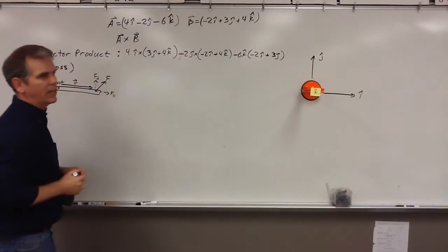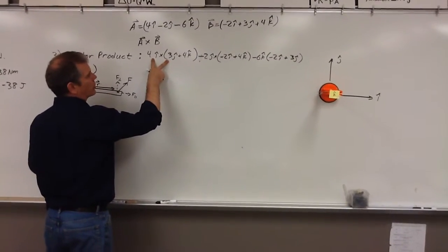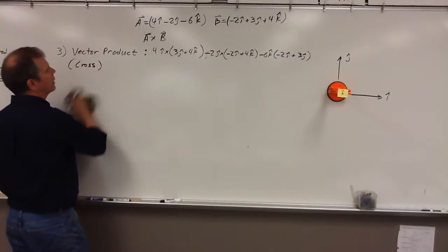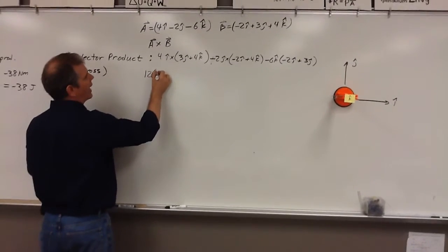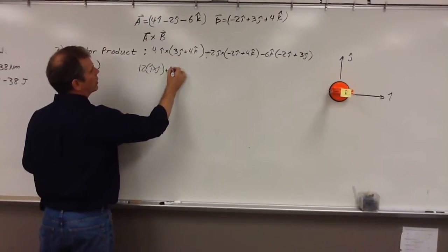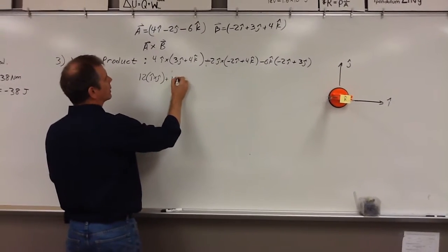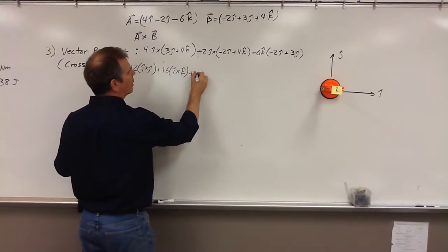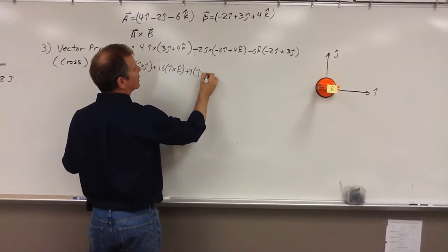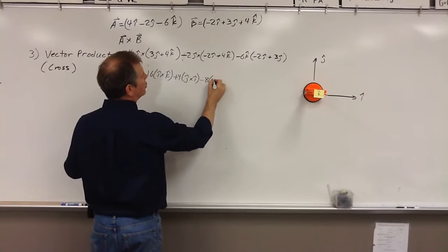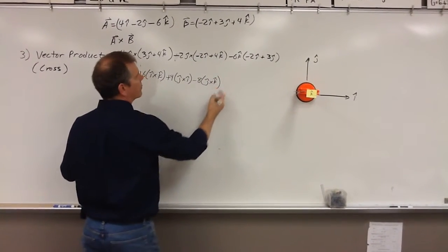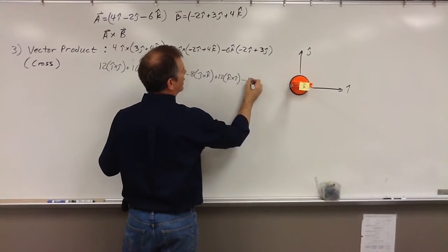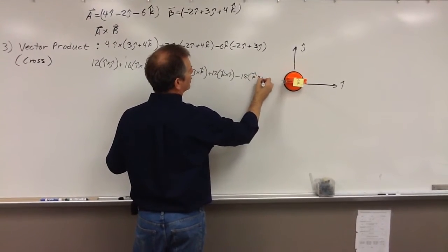This is where you have to keep straight what you're doing. I'm going to cross these two first, doing just the numbers first and then the vectors. 4 times 3 is 12, so i-hat cross j-hat; plus 4 times 4, which is 16, i-hat cross k-hat; minus 2 times 2 is 4, j-hat cross i-hat; negative 8, j-hat cross k-hat; positive 12, k-hat cross i-hat; negative 18, k-hat cross j-hat.